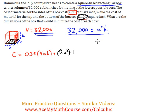So the cost function is C = 0.25(4xh) + 1(2x²). Simplifying, a quarter times four is one, so C = xh + 2x².